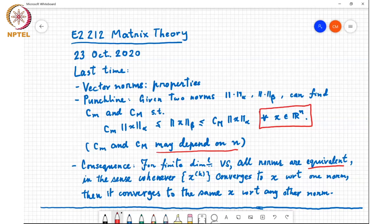That means component-wise convergence is equivalent to convergence with respect to any norm. The other thing here is the same x.